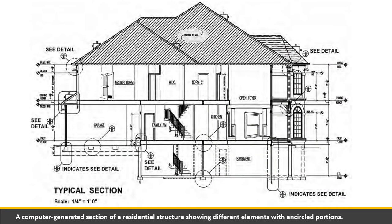This computer-generated section of a residential structure shows different elements within encircled portions — these are all symbols. Doors are drawn in symbols, as well as windows, columns, and footings. In a floor plan or elevation, you cannot see the detail of the footing, so it is represented by a rectangular shape. There is a separate plan or separate detail showing the structure of the footing — for example, how many deformed bars are used, what is the spacing, what is the thickness. The most detailed version of the drawing is seen in the detail plan, but on an elevation, only symbols are visible.